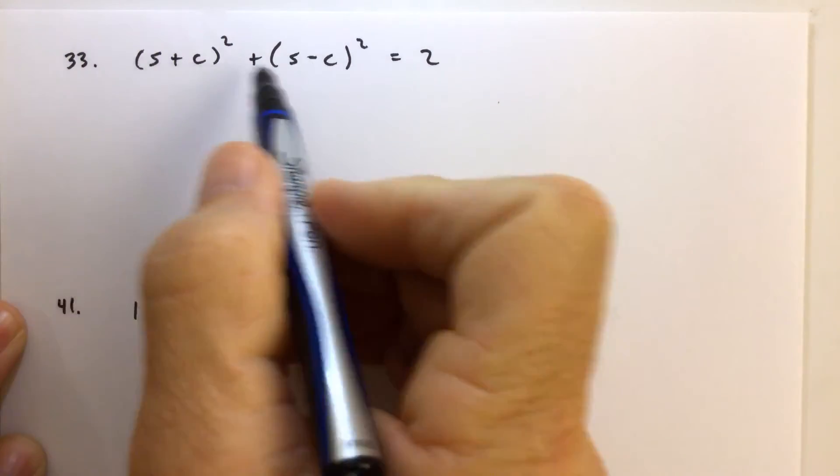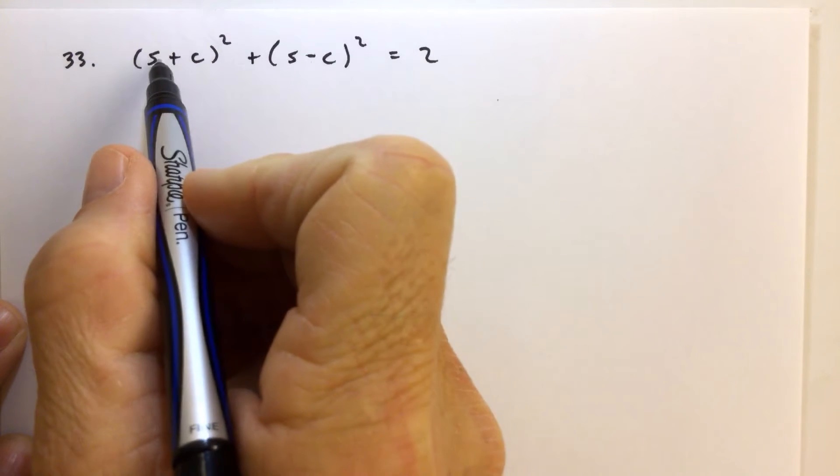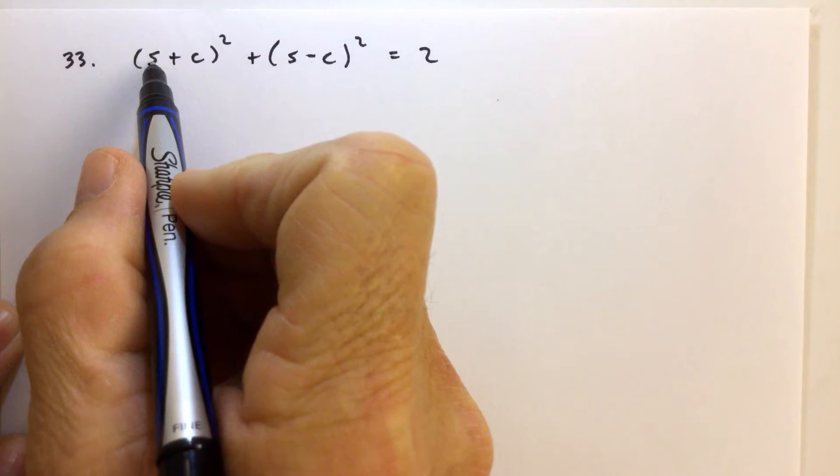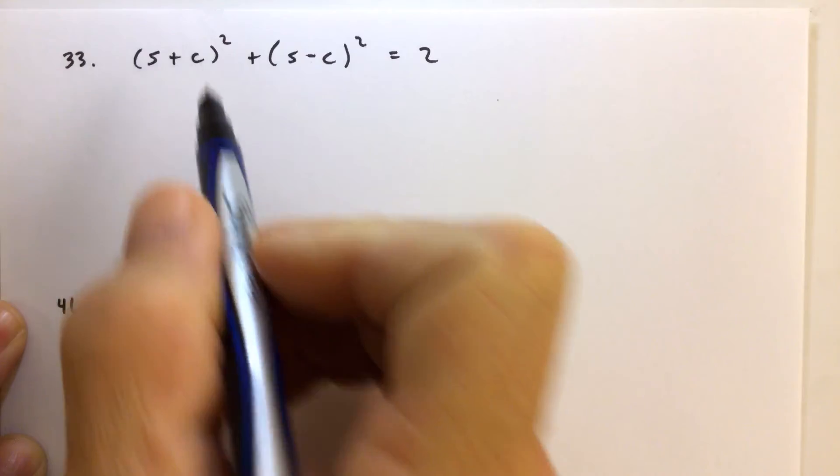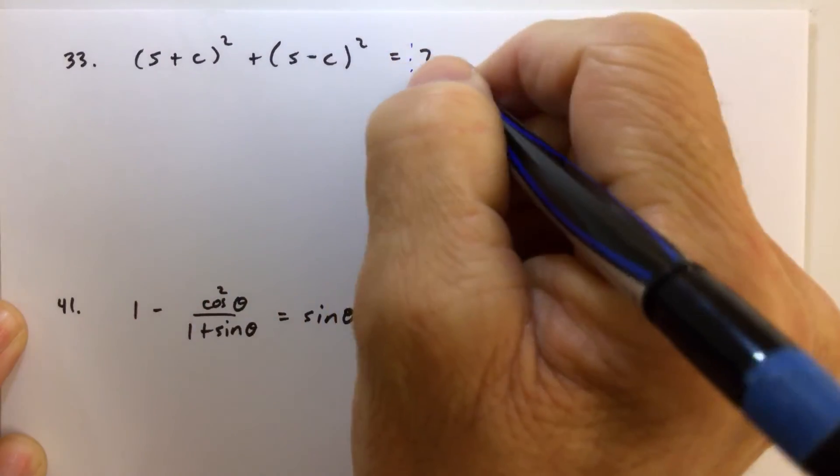For number 33, I got a little bit lazy. Instead of copying down the entire problem the way it was written, I just substituted s for sine of theta and c for cosine theta. Anyway, this whole big mess on the left-hand side is supposed to be just 2.